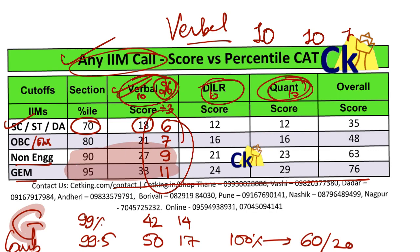Look at it another way: out of 26 questions, all I need to do is 10 questions correct and you are getting a call from IIMs. Don't you think it's doable? Yes, it's very much doable, and that is going to be our target.